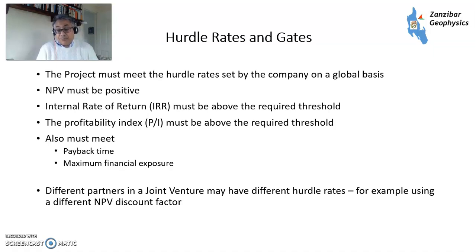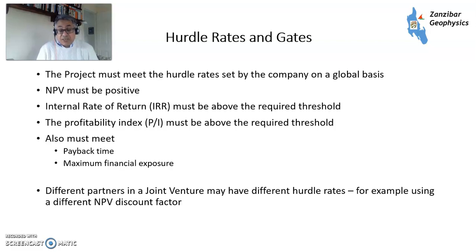Then there's the profitability index — P over I — which needs to be above a required threshold. You must also have a look at payback time and maximum financial exposure, so if you're down $3 billion at the peak rate, that might be a little bit hard to do. Different partners within a joint venture may have different hurdle rates, and they may use a different NPV discount factor, which can be a bit of a problem in some joint ventures.